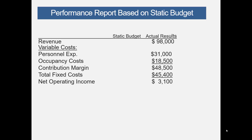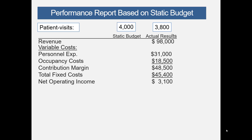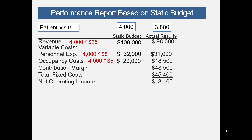We have a column for the static budget and the actual results are given. The static budget is based on 4,000 patients while the actual results are based on 3,800 patients. For revenue, that will be 4,000 times $25, or $100,000. For personnel expenses, 4,000 times $8, or $32,000. For occupancy costs, 4,000 times $5, or $20,000. The contribution margin is $48,000. Fixed costs are budgeted at $45,000, and income is $3,000.